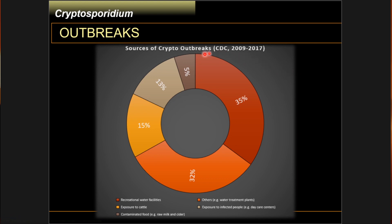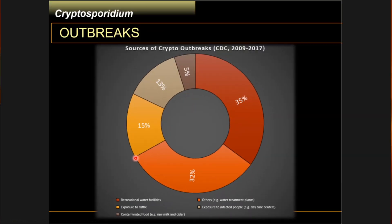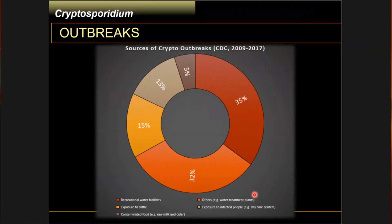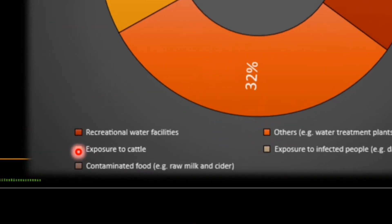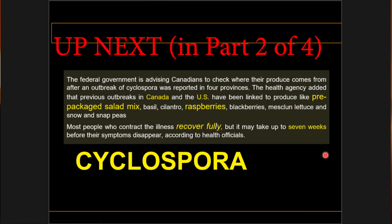Looking at outbreak data, the majority of Cryptosporidium outbreaks happen in recreational water facilities — about half of waterborne diseases from chlorinated swimming pools are Cryptosporidium-related, due to their chlorine-resistant cysts. A significant portion of infections also come from water treatment plant contaminations. Additionally, around 15 percent of cases are due to exposure to farm animals, primarily cattle, owing to Cryptosporidium parvum zoonotic transmission.